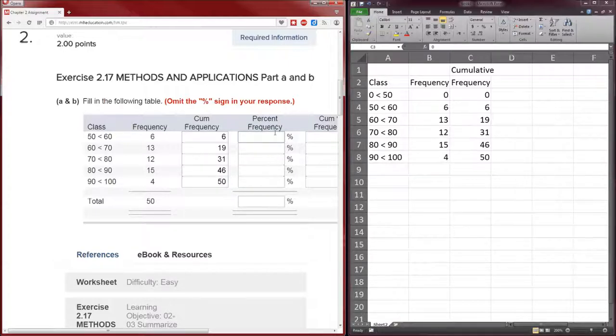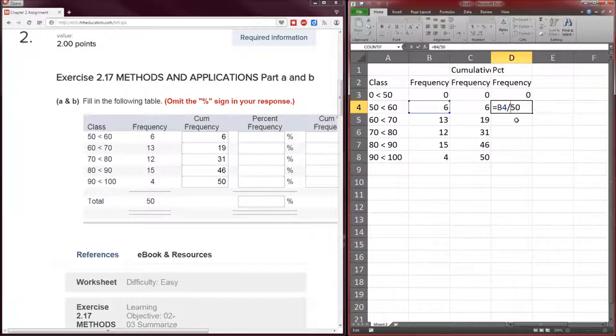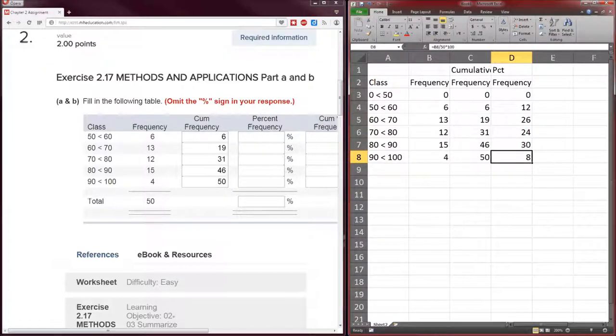Next column is the percent frequency, which means it's the frequency as a percent of the entire sample size. The frequency for this class is 6, as a percent of the entire sample size it's 6 over 50. It's the frequency in that class divided by the total sample size of 50. Wait, it wants it in percents. This is in proportions. So it's not just B4 divided by 50, we have to make that into percents, so it's times 100.